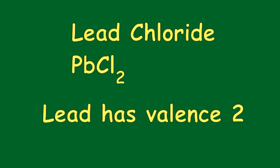For instance, lead chloride has the formula PbCl2. In this case, lead has a valence or oxidation state of 2 because it combines with 2 chlorines.